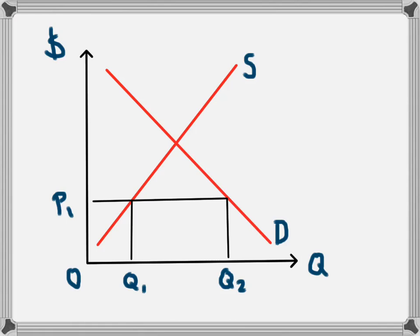If domestic producers charge the equilibrium price, they wouldn't be able to sell any products because people could buy the product cheaper from overseas. Because the price is so low, domestic producers won't want to produce a lot of it. They're not going to make a lot of profit on each unit they sell, so they will only want to supply from zero to Q1.